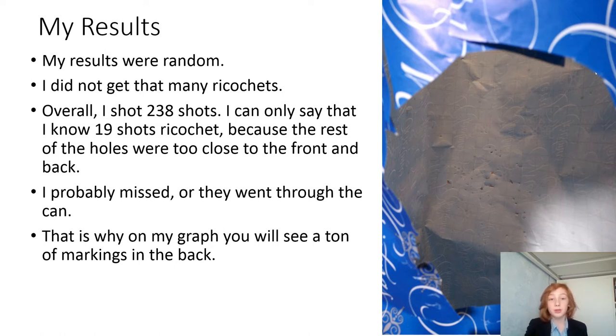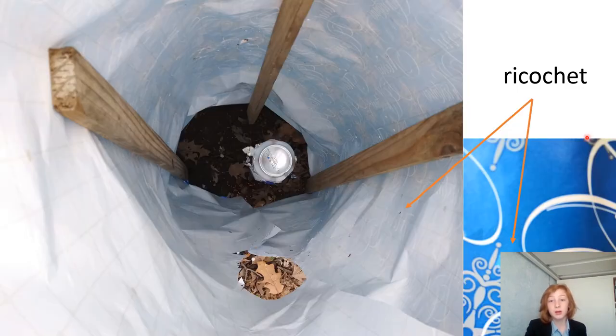Overall, I shot 238 shots, but I only know that 19 ricocheted. More could have ricocheted, but there was a ton of holes in the front and in the back. Those could have been ricochets, but with the front I could have missed, and with the back they could have just went through the can. I put all the markings, but that's why you'll see a bunch of markings at near 180 degrees on my graph. 180 degrees is near the back.